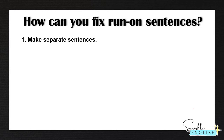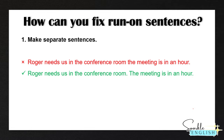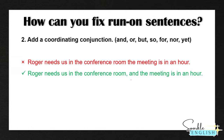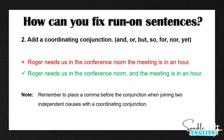So now let's look at four different ways we can fix a run-on sentence. Number one is to make separate sentences. So 'Roger needs us in the conference room.' — add a period, then capitalize the next word: 'The meeting is in an hour.' Now we have separated these into two independent clauses, and this is correct. The second way is to add a coordinating conjunction like and, or, but, so, for, nor, or yet. For example: 'Roger needs us in the conference room and the meeting is in an hour.'